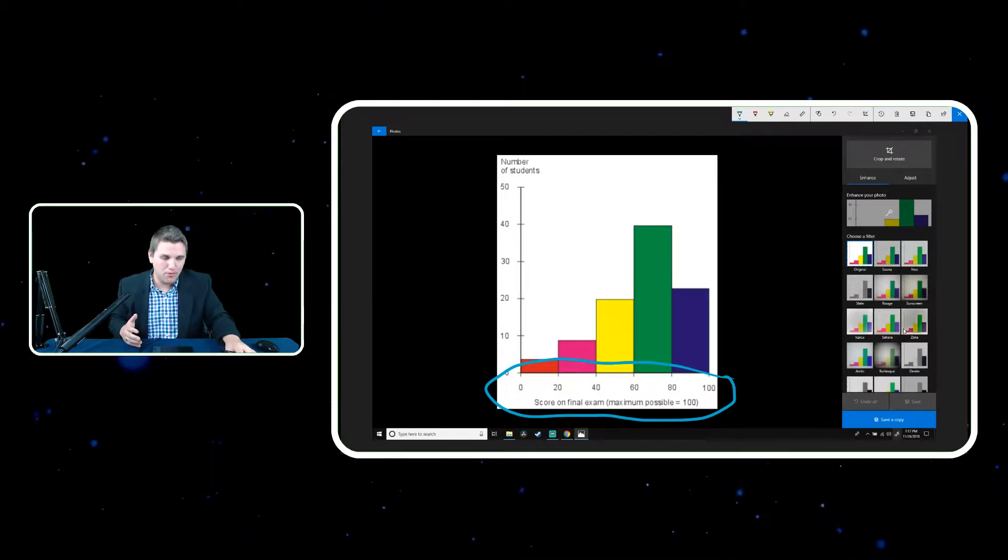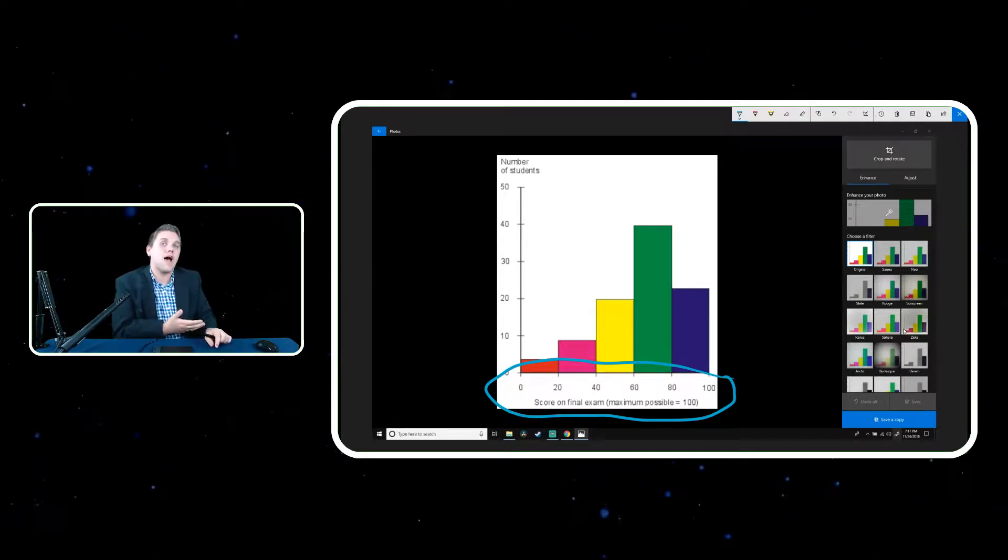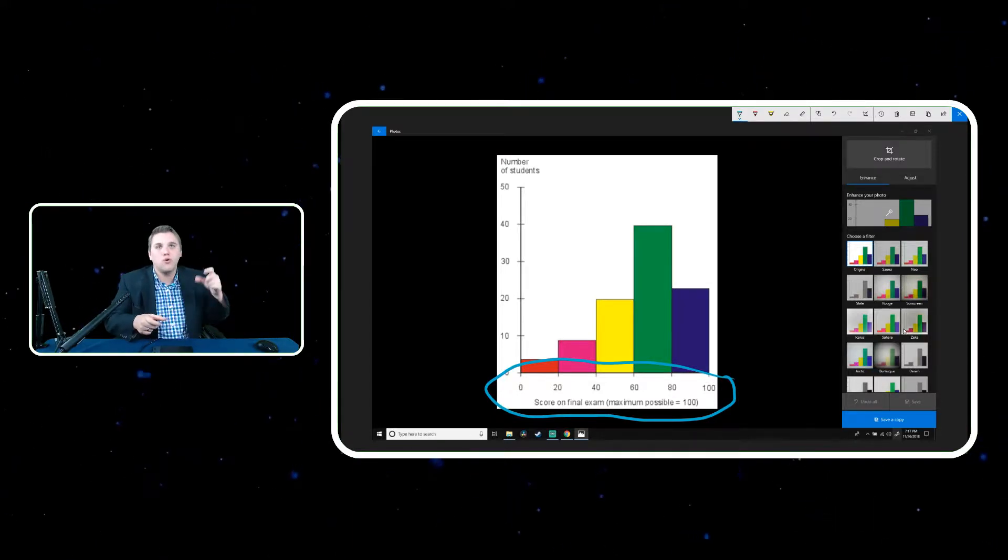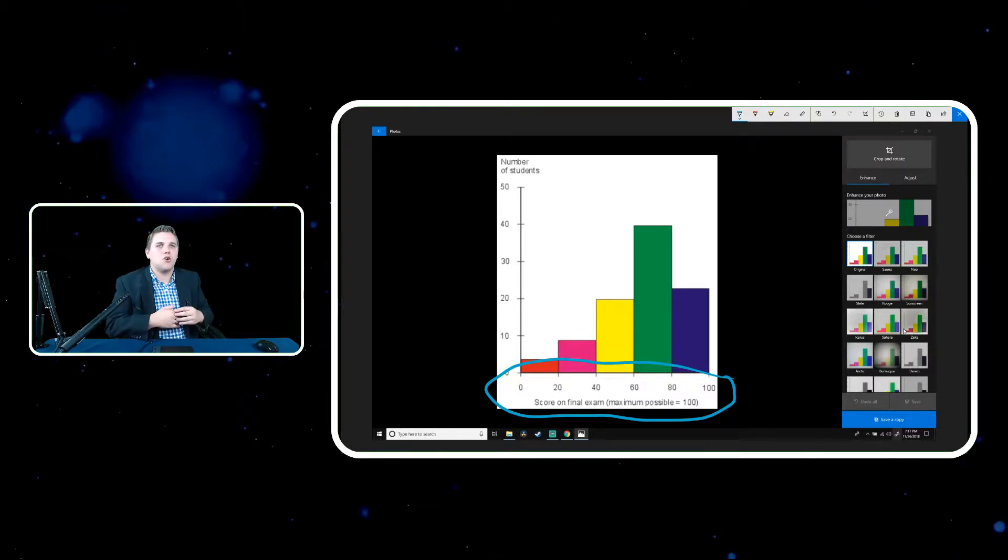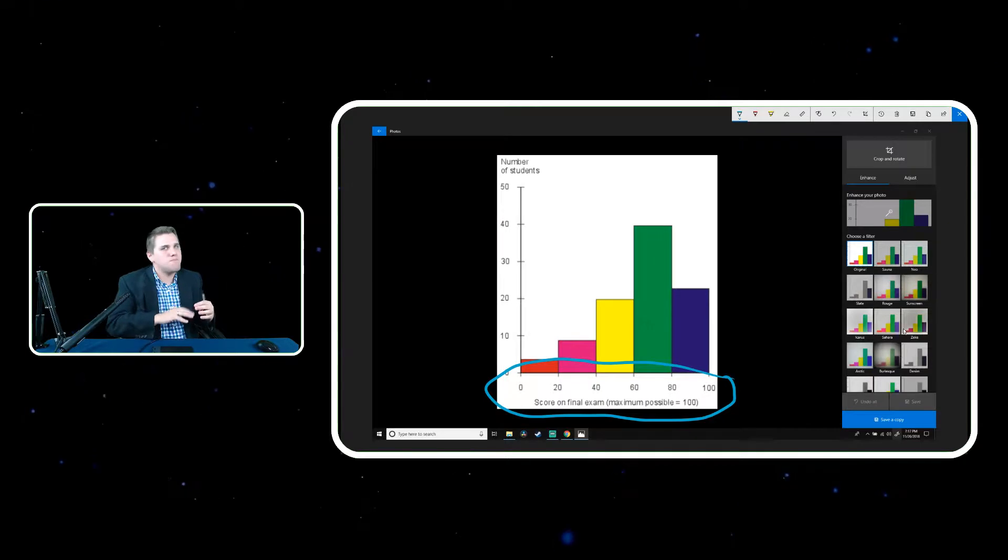This is something that a lot of people get wrong. A lot of people think that these are bar graphs but they're not. Bar graphs are meant for categorical data. So when you have different categories like apples, oranges, red, blue, green, this is an example of something that is numerical and so the bars mean a little bit different.